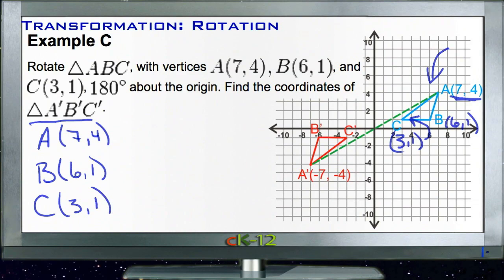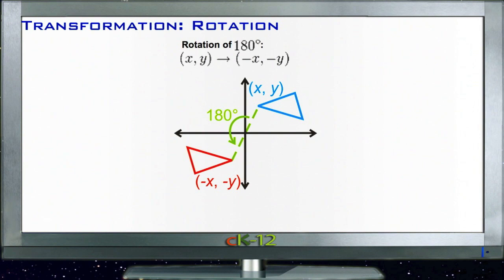and we apply our rule that we learned for rotating for 180 degrees, let me remind you of that real quick. Rotating 180 degrees, we take our original x and y and we just make it negative x, negative y.